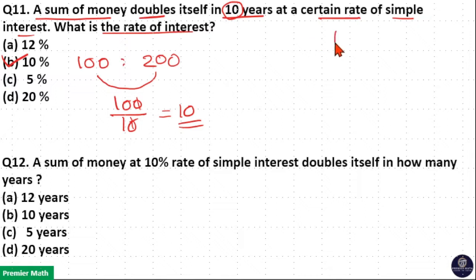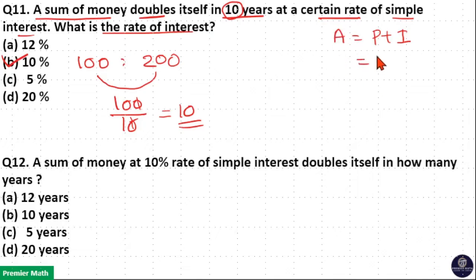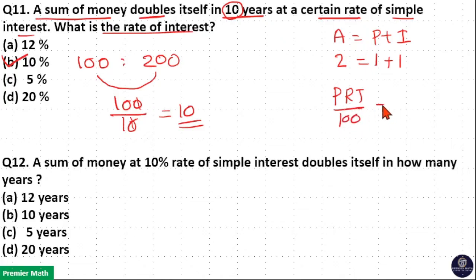Using the formula: Amount = Principal + Interest. Interest received in 10 years plus initially invested amount equals total amount received after 10 years. If I invest 1 unit, after 10 years I receive 2 units. So 1 plus 1 equals 2, meaning principal equals interest. The simple interest formula is PRT divided by 100, and here simple interest equals principal.